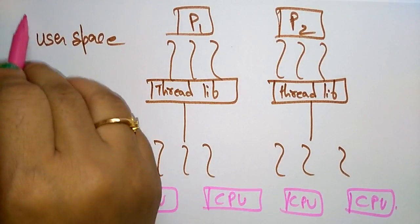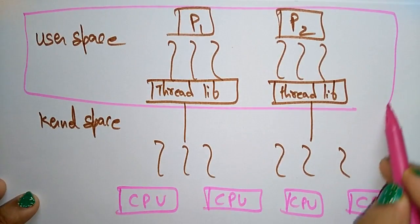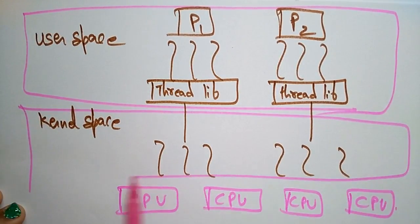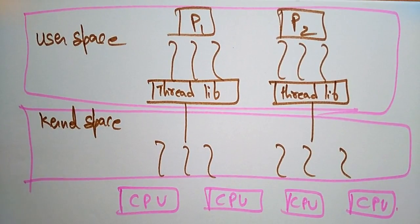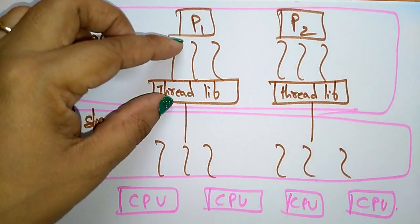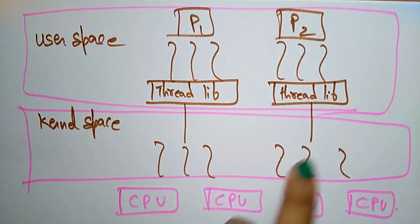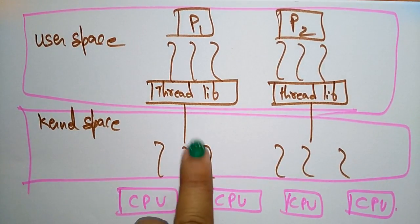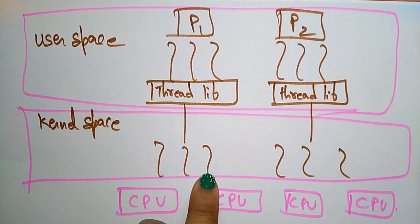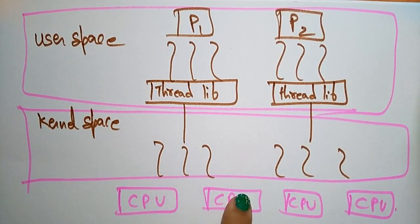So this is the concept of many-to-one: process one and process two have many threads coming in, but only one kernel thread will be executing one thread at a time. Multiple threads are unable to run in parallel on multiple processors.